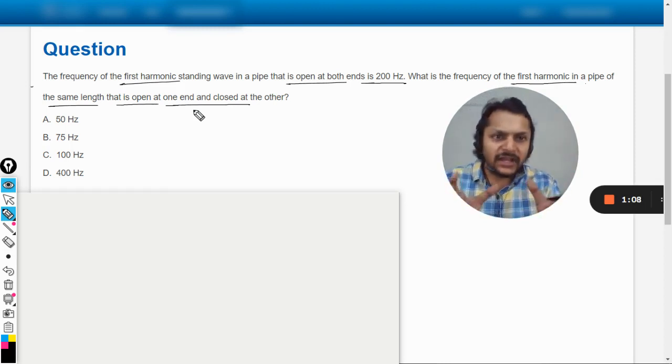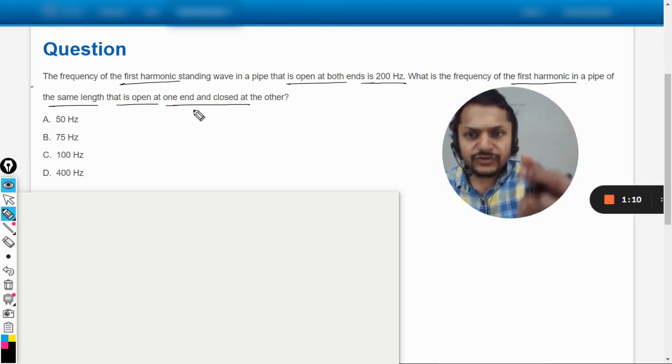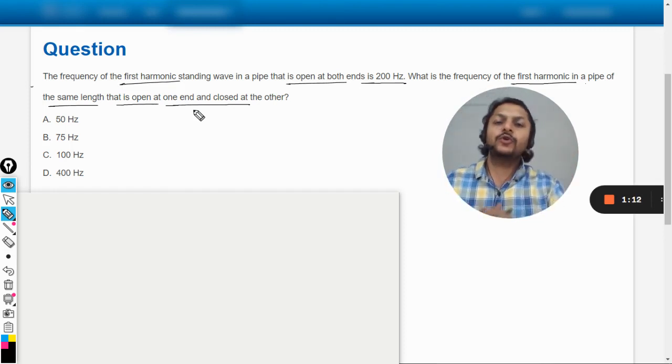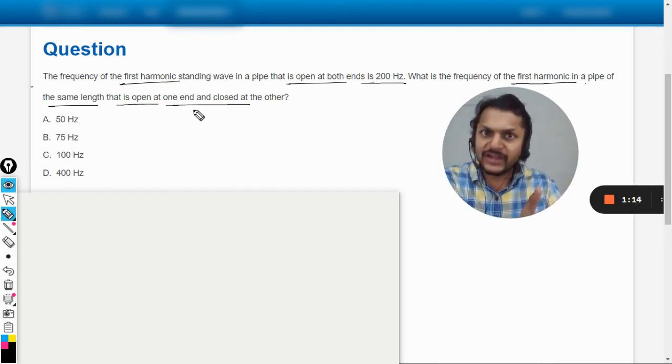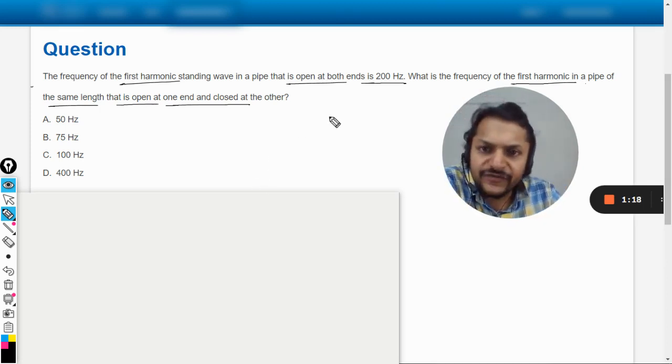Okay, so there are many kinds of standing waves: one end is closed one end is open, both ends are open, or both ends are closed. Anyways, let us now see further.